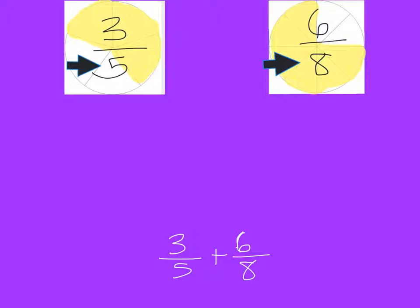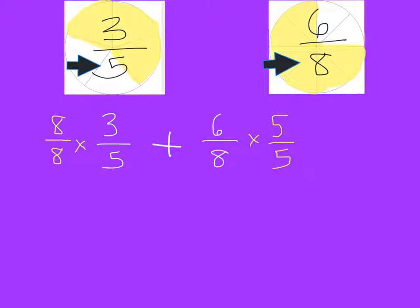Then, we are going to multiply three-fifths by eight-eighths and six-eighths by five-fifths. By multiplying eight-eighths and five-fifths to the sides of the opposite denominator, this creates a common denominator. You can also think about the denominator by saying, what is the common multiple for both numbers? In this case, it's forty.